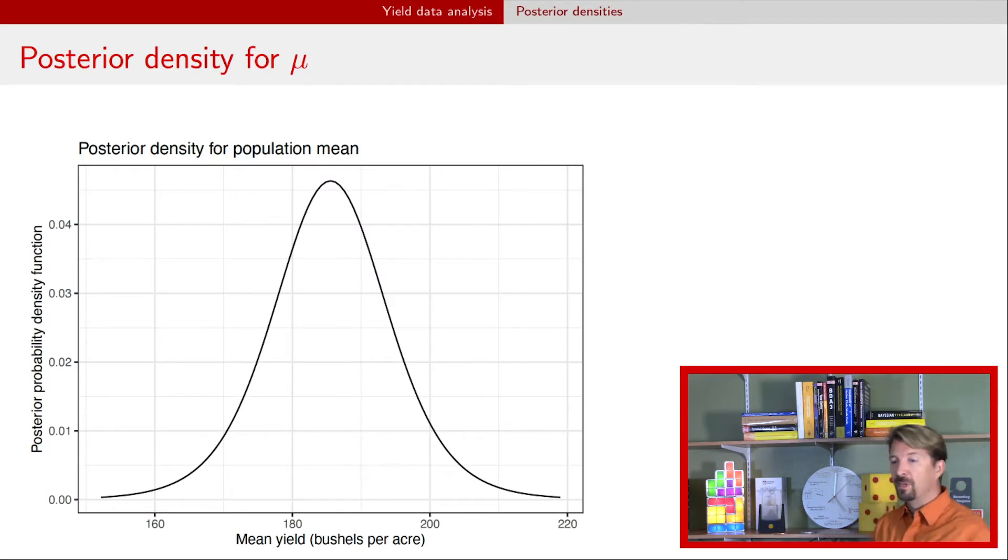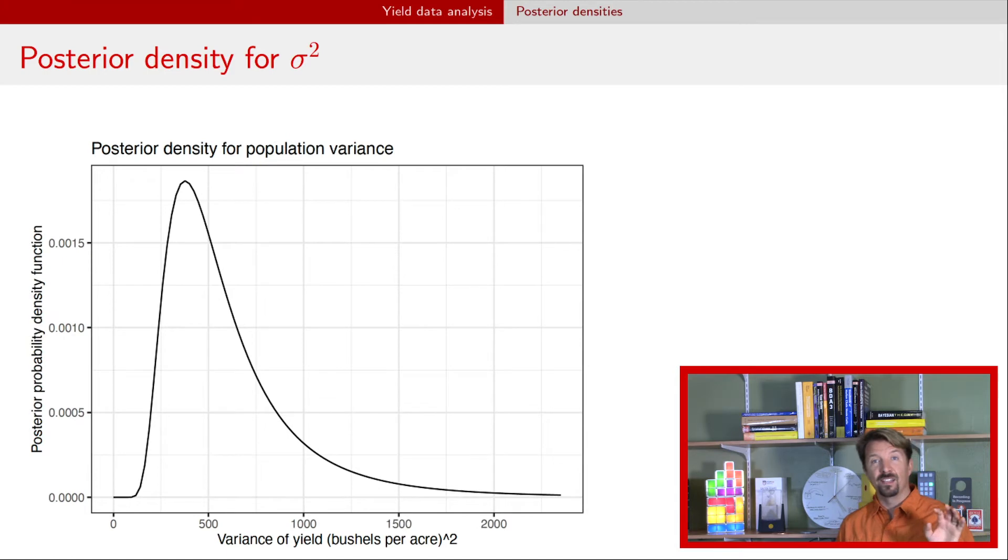All right, so here's the posterior density for μ. We can see that it's centered at about, I don't know, 185 there, and has a spread that ranges at least down to 170 and up to 200 or so. All right, so this summarizes, or in some sense, this is the end result of a Bayesian analysis of this problem. We're interested in the population mean yield in Iowa farms, and that density summarizes all of that information. Similarly, we could take a look at the posterior for the variance. So here's the probability density function for the posterior for that variance, and it also summarizes all the information we have about that variance.